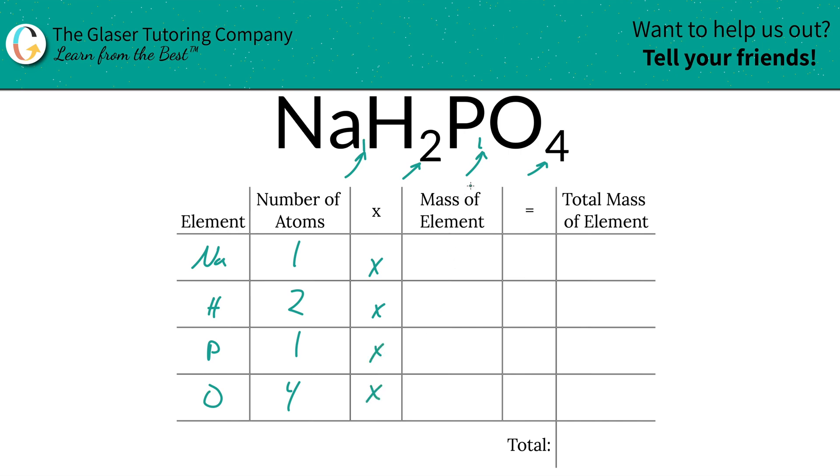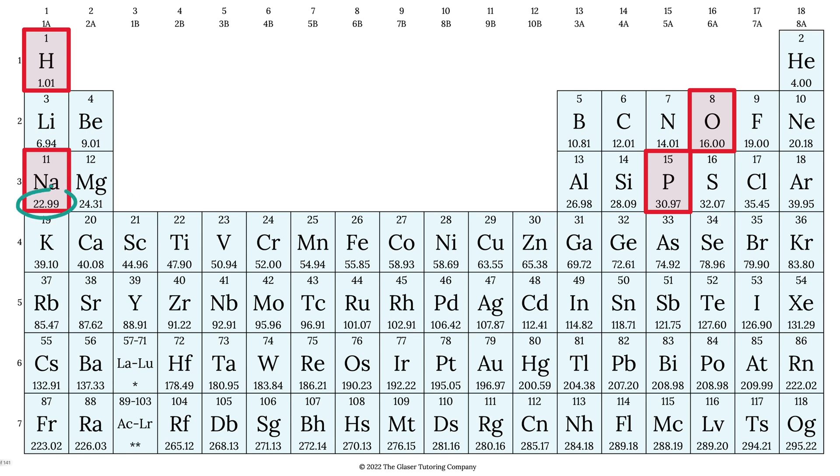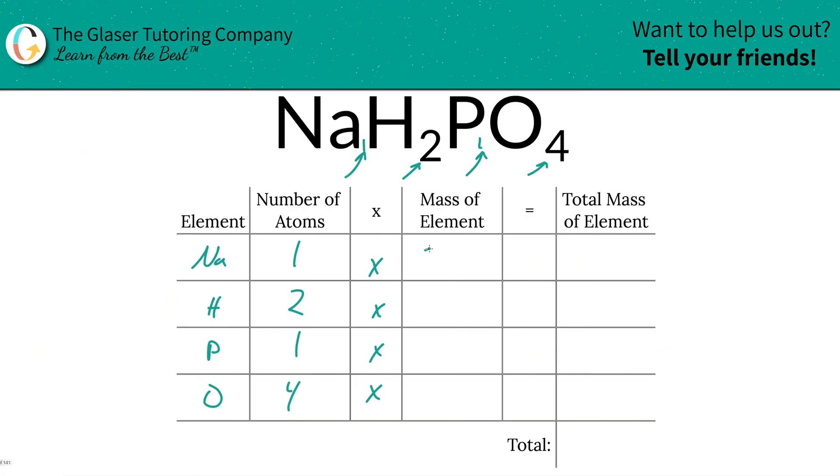All right. Then we're going to take those number of atoms and multiply it by the mass of each element. Those masses are found on the periodic table. So take a look. Sodium is 22.99. Hydrogen is 1.01. Phosphorus is 30.97. And oxygen is 16. So those are the masses we're going to write in.